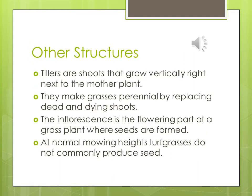Tillers are the shoots that grow vertically next to the mother plant. They make grasses perennial by replacing dead and dying shoots. The inflorescence is the flowering part of a grass plant where seeds are formed. At normal mowing heights, turf grasses do not commonly produce seeds — if you see seed heads, the lawn hasn't been mowed in quite a while.